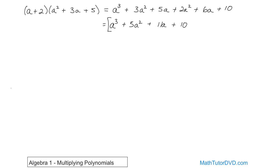Now you see why we're naming this section 'multiplying polynomials.' Here I have two terms times three terms, but I could have two terms times four terms — a would just get distributed to everything including that fourth term. It's the same general pattern: you can multiply any two polynomials using this technique. And now you know why I don't really like the idea of teaching FOIL — it teaches you to remember letters rather than what you're doing. If you know you're just distributing these terms in, you can multiply any two polynomials without memorizing rules.